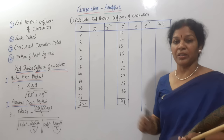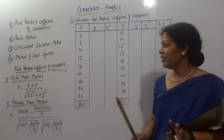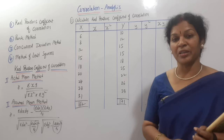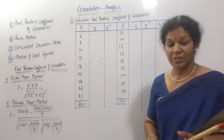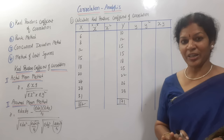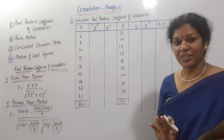First, let us focus on small x. How to calculate small x? As per the actual mean method, small x equals x minus x̄. If you were going for assume mean it would be x minus A, but here we go for actual mean. So x minus x̄ means we need x̄ first. This is an individual series, so x̄ equals sigma x divided by n.